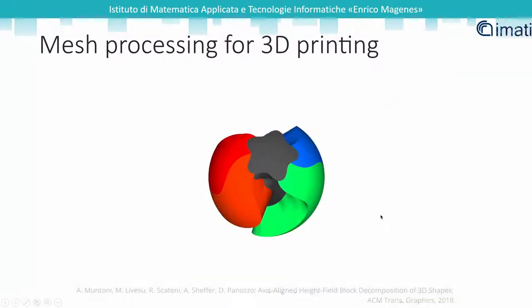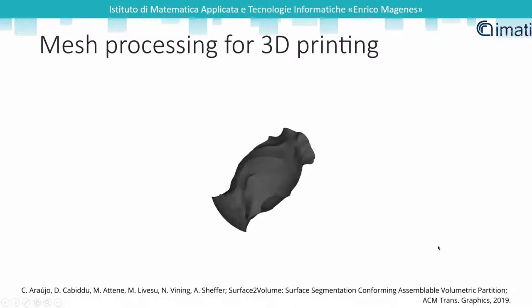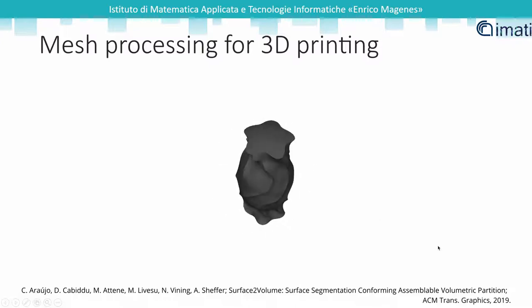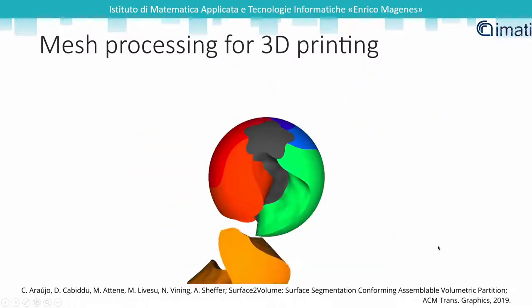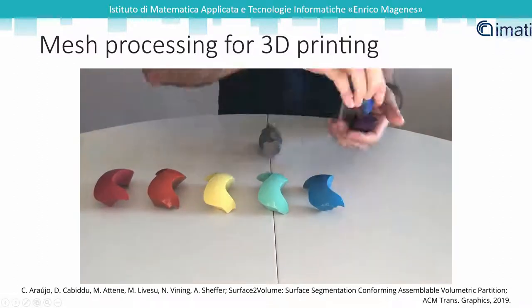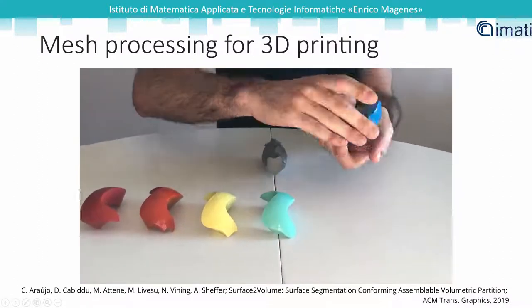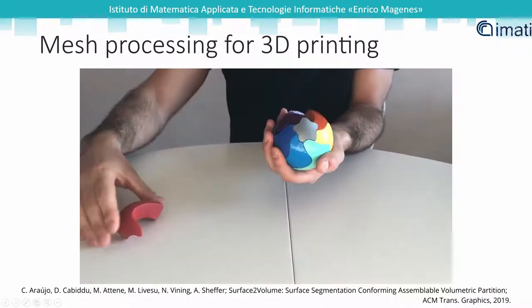Our Surface2Model algorithm partitions a colored surface into single color parts. Each part can be fabricated using a low-cost single filament 3D printer, and our algorithm guarantees that the parts can be reassembled without obstructions.